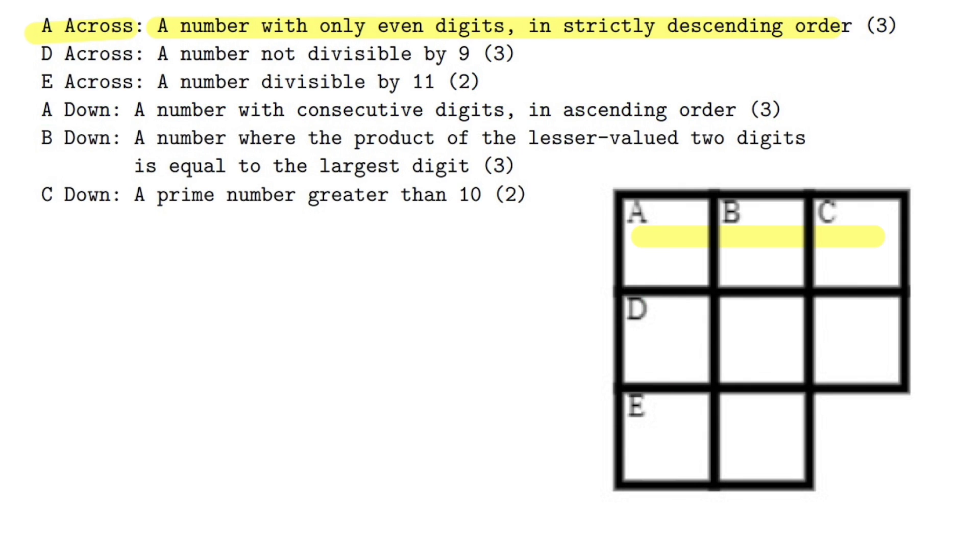I'll pause the video for you to try this. All right, now let's go over this. This is how I will do it. First, if you look at A across, it says a number with only even digits in strictly descending order. That means I can have either like 8-6-2, this is a possibility, or 8-4-0, also a possibility. But in fact I cannot have 8 to start off with because if I put an 8 right here...